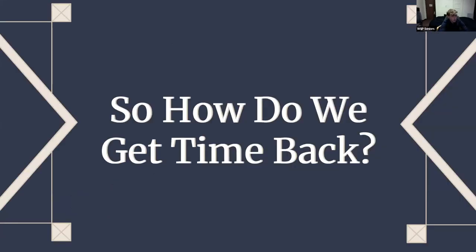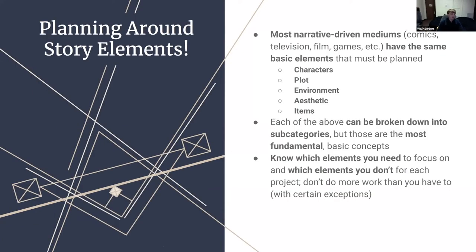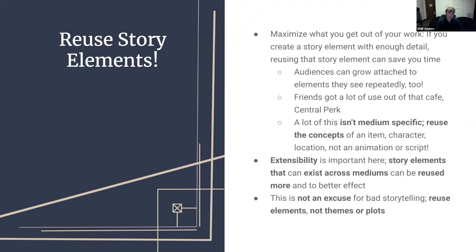How do we get that time back? We can plan around story elements. Most narrative-driven mediums have the same basic elements: characters, plot, environment, aesthetic, and items. Each artistic work in a transmedia architecture is likely to focus on certain elements over others — you should do less work on elements you don't want to focus on and more on those you do. We can also maximize what we get out of our work on an element-by-element basis: if you create a story element with enough detail, reusing it can save you time.